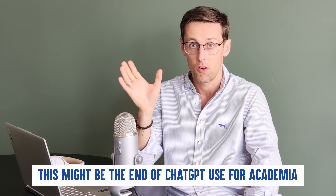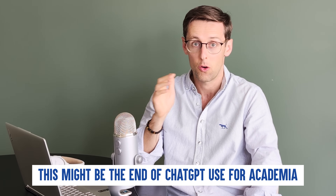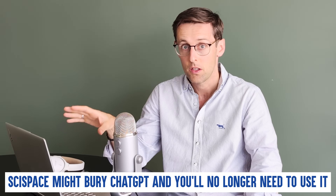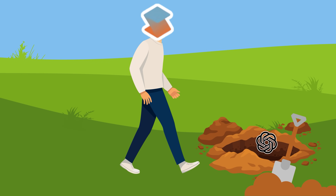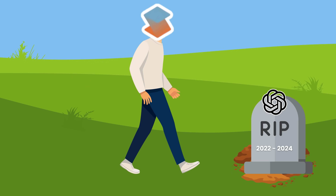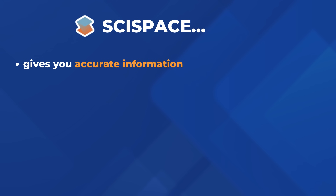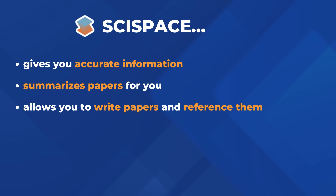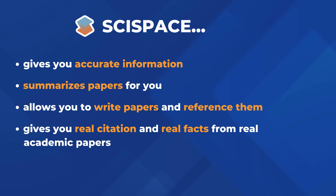This really might be the end of ChatGPT use for academia. SciSpace might bury ChatGPT and you'll no longer need to use it. Why? Because SciSpace actually has access to millions of papers and it does not invent information that does not exist. SciSpace gives you accurate information, summarizes papers for you, allows you to write papers and reference them, and it gives you real citations and real facts from real academic papers — unlike ChatGPT, which is well known for hallucinations.